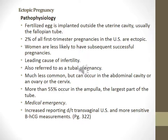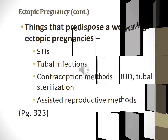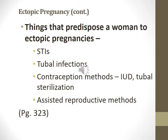Ectopic pregnancy: fertilized eggs are implanted outside the uterine cavity, usually in the fallopian tube. About 2% of all first trimester pregnancies in the U.S. are ectopic. Women are less likely to have subsequent successful pregnancies, and it is the leading cause of infertility. Much less commonly it can occur in the abdominal cavity — more than 55% occur in the ampulla, the largest part of the tube. This information is on page 322 of your textbook. Things that predispose a woman to ectopic pregnancies include STIs, tubal infections, contraceptive methods such as IUD and tubal sterilizations, and assisted reproductive methods. Found on page 323.